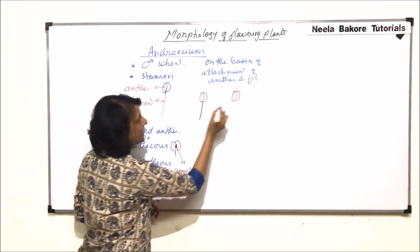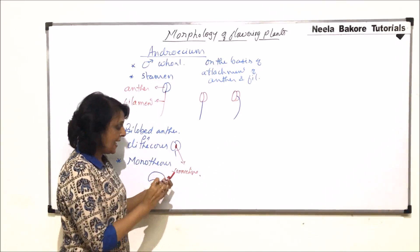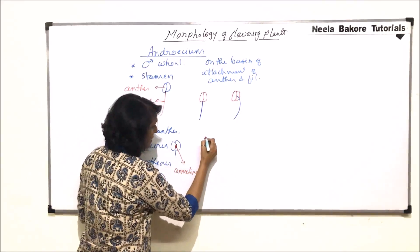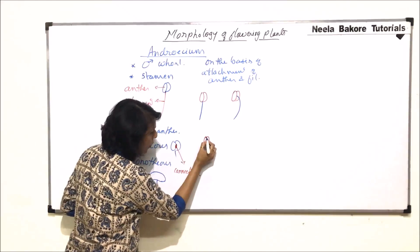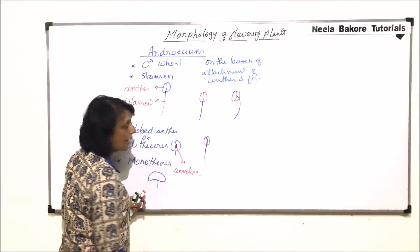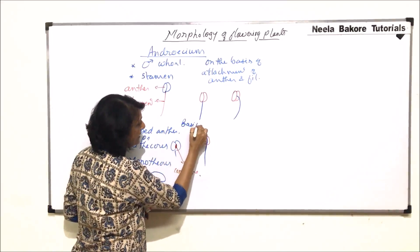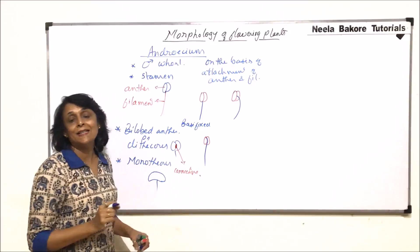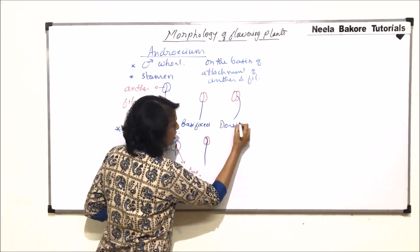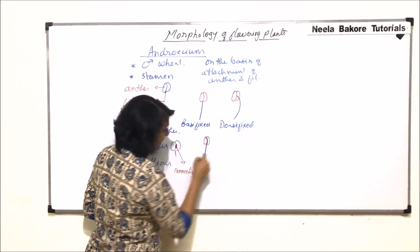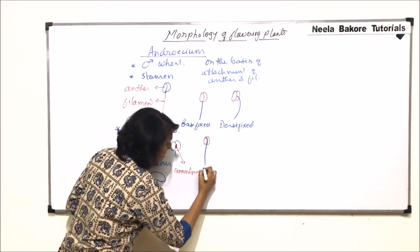In the first case, the filament is attached from the base part of the anther. In the second case, it is attached on the dorsal side of the anther. In the third case, the filament runs all along the length. The first type is called basifixed — the filament is attached at the base of the anther. The second is called dorsifixed.